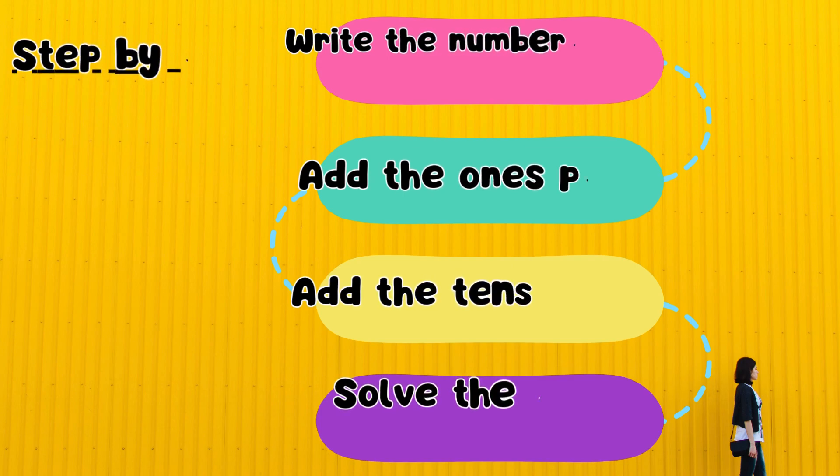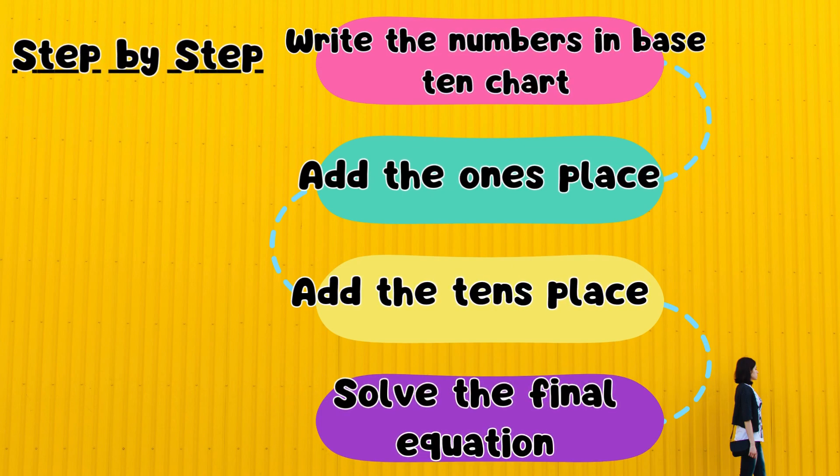While doing addition of two digits, remember these steps. 1. Write the numbers in the base 10 chart. 2. Add the 1s place. 3. Add the 10s place. 4. Solve the final equation.